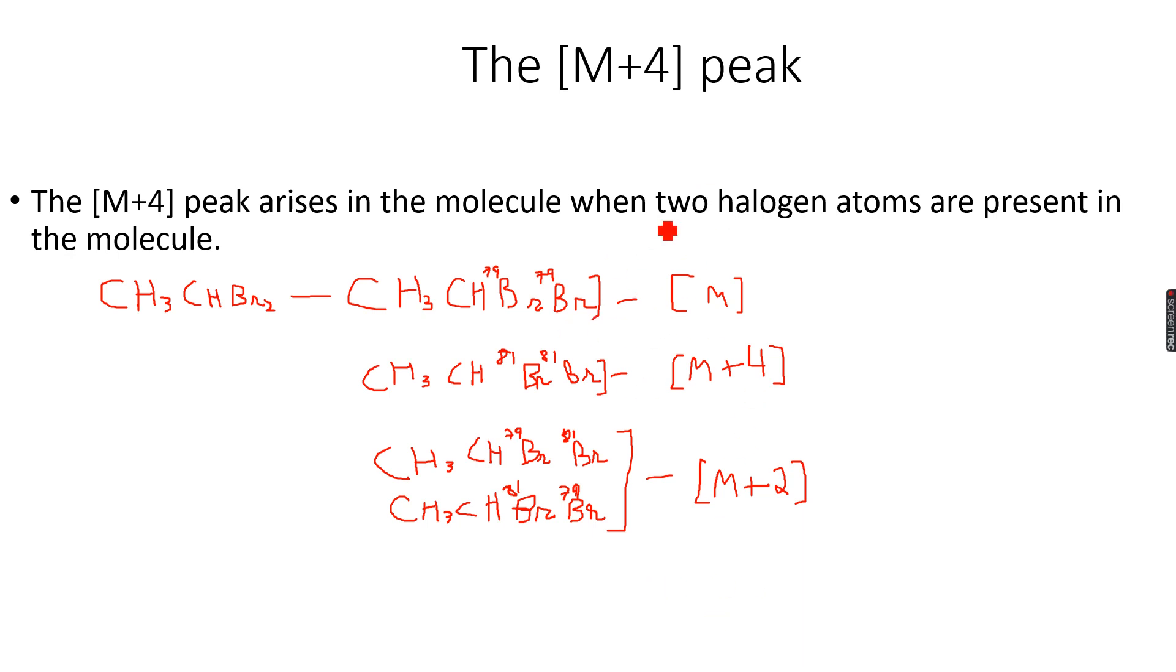Now for both these isotopes, the relative abundance is 50%, which is half, and 50%. Both these isotopes 50-50. So for this, my probabilities will be 1/2 times 1/2 because there are two Br79 isotopes, both have a relative abundance of 50%, so this gives me 1/4. In this case, the same thing: 1/2 times 1/2, giving me 1/4.